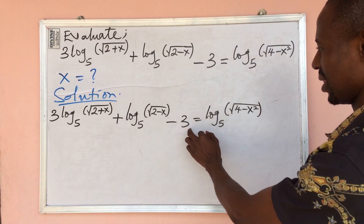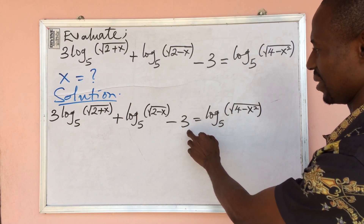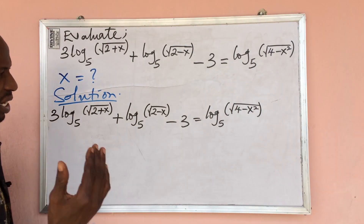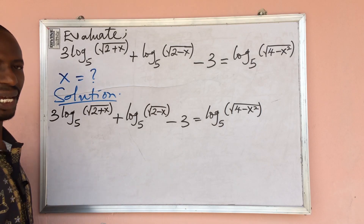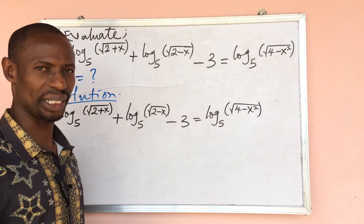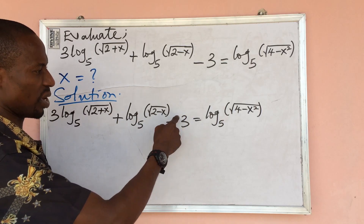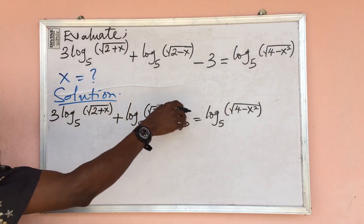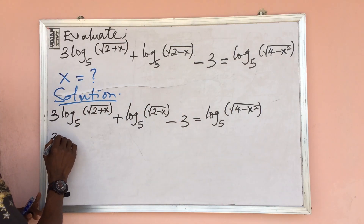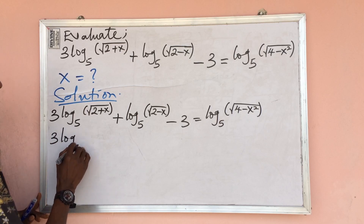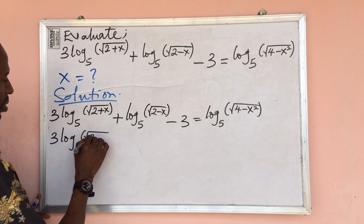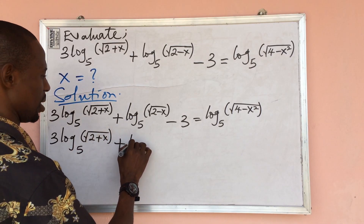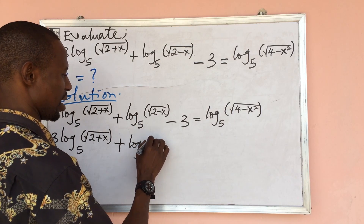According to the rule of logarithm, the log of any number to the same base as itself is 1. So if we apply that here, we have 3 times 1, which still gives us 3. So the whole expression gives us: 3 log base 5 of (root of 2 plus x), plus log base 5 of...